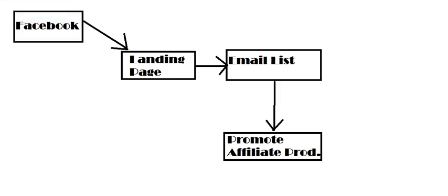What's going on guys, Adam Snyder here with Homemade Entrepreneur. I want to show you another video on exactly the process I use to get people from Facebook into my email list and then convert that list into dollars. I'm going to walk you through the steps I take to create an actual campaign on Facebook, get traffic to a landing page, get people to opt into my email list, and then send them into an automated autoresponder sequence where I promote an affiliate product.